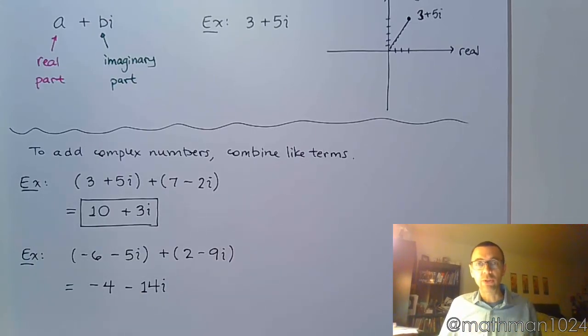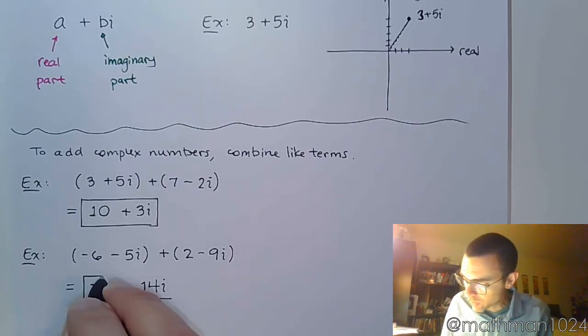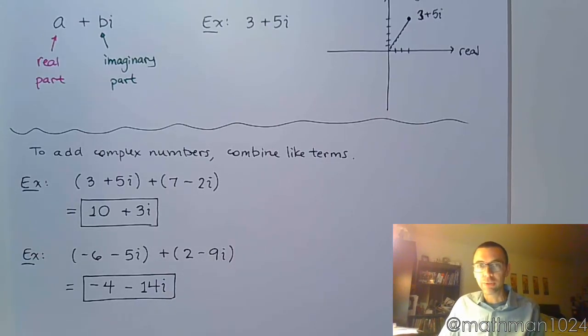Again, that's it. You just combine like terms. You can even treat the i like the variable x, right? It has the same kind of properties with it. So if we think about it that way, I think we should be doing quite well here.